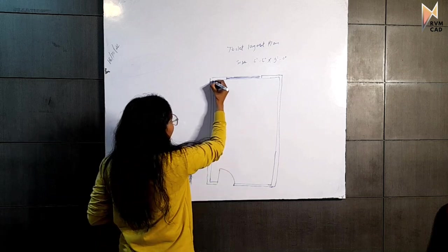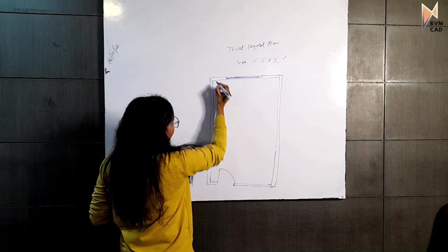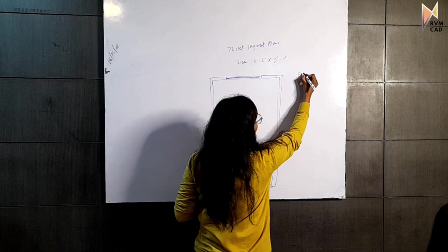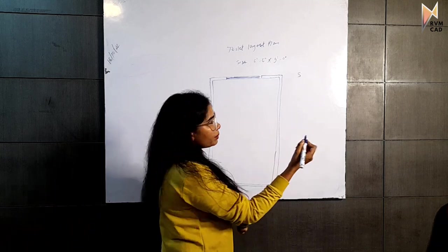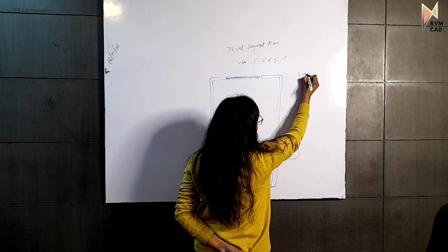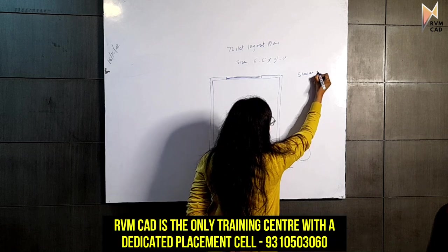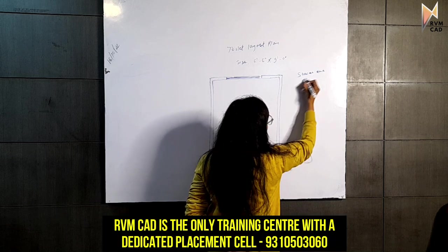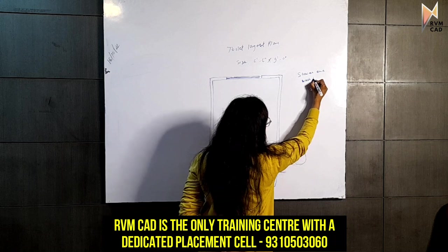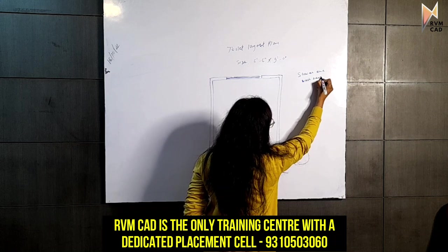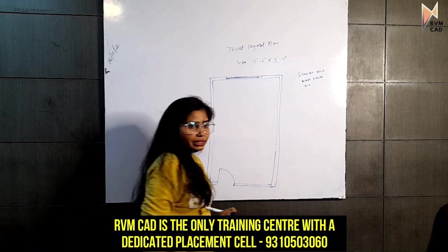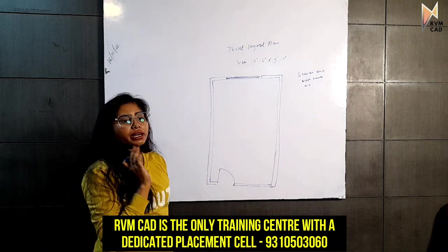We have made this size. Now we have put 3 things in it — the requirements of the client. Those are: shower area, wash basin, and WC. Those are the 3 things we have taken.